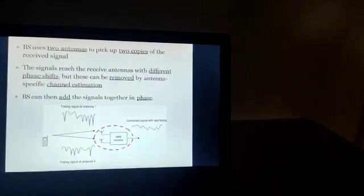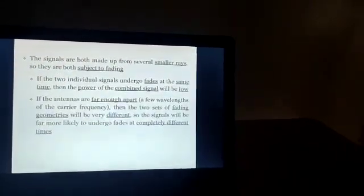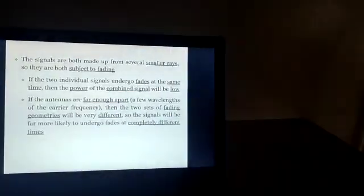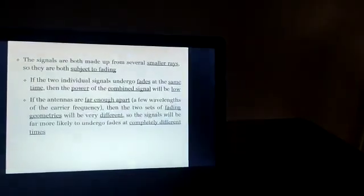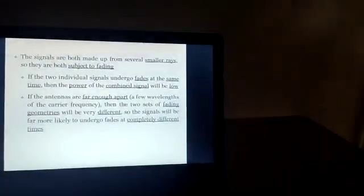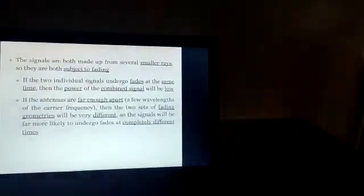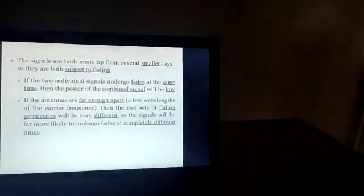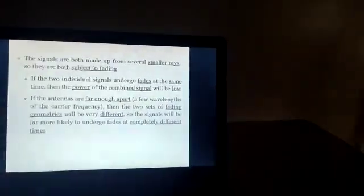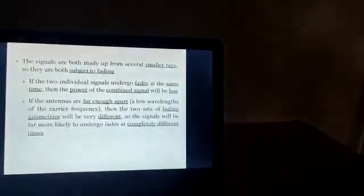The base station can add the signals together in phase. The signals are both made up from several smaller waves, so they are both subject to fading. If two individual signals undergo fading at the same time, the power of the combined signal will be very low. If the antennas are far enough apart, then the two sets of fading geometries will be very different, so the signals will be far more likely to undergo fades at completely different times.